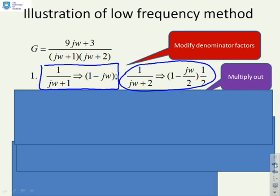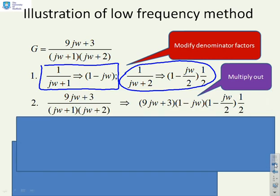So I substitute these into the original system and multiply it out. We're going to replace the denominators by the Taylor series and end up with this. So we've now got three factors which we can multiply out. The next step is to actually do this multiplication, and this is what we get.